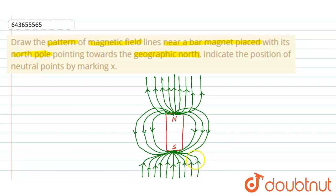Okay, and also we have to indicate the position of the neutral points by marking x. So at this point the magnetic field is neutral. So here is point x and here is also point x. The magnetic field around here will be acting like this.